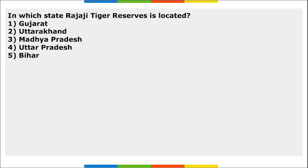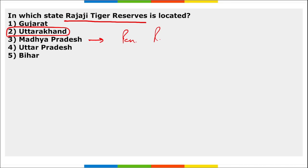In which state is Rajaji Tiger Reserve located? It is in Uttarakhand. Also in Madhya Pradesh: Pench National Park, Panna National Park, and Bandhavgarh National Park are located there.